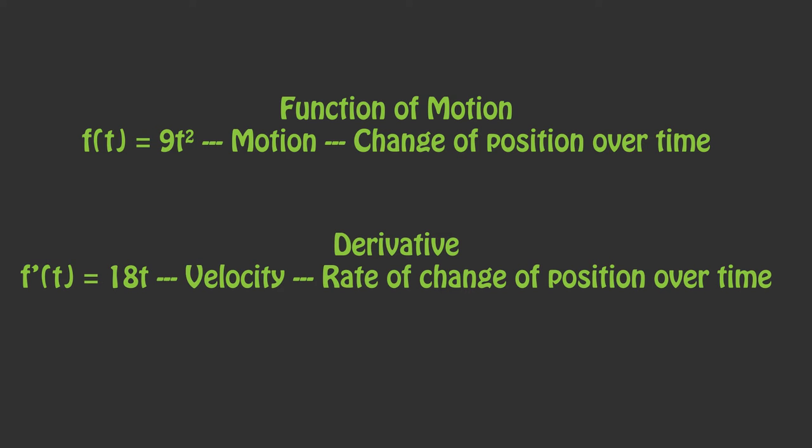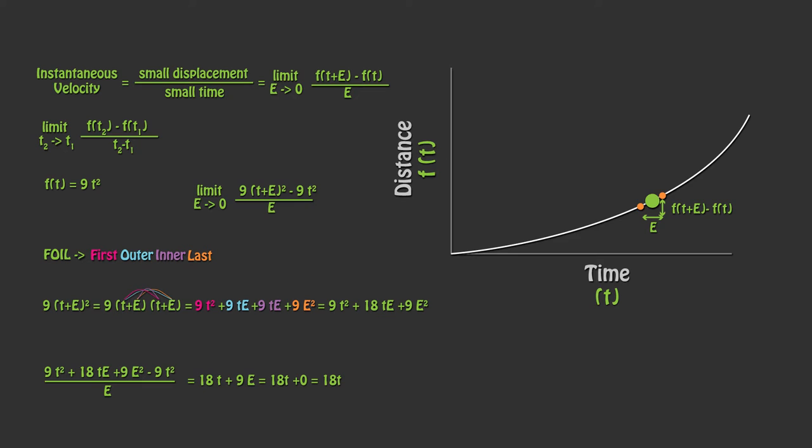Let's be honest, that wasn't very fun. We would have to do this for every function that we come across and some functions are much more complex than that. So Newton created a proof that allows us to quickly determine the derivative.